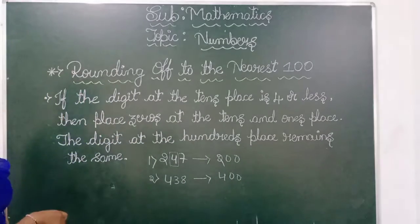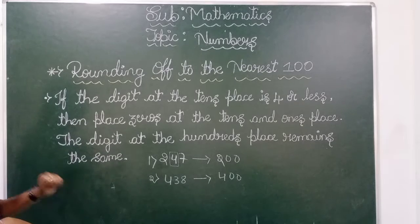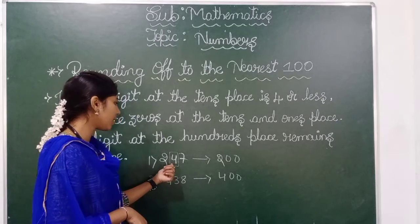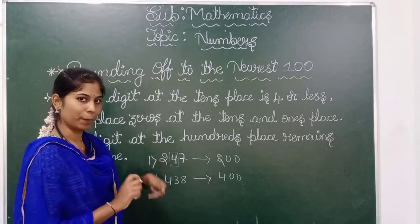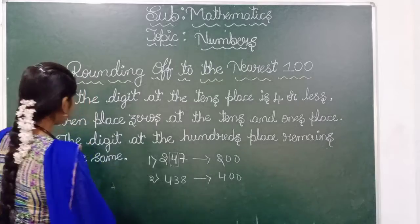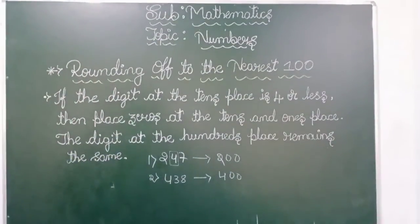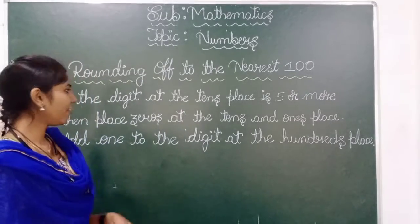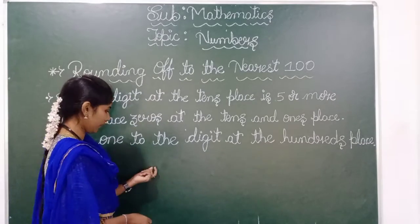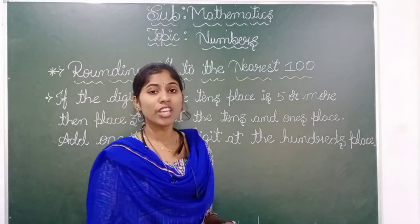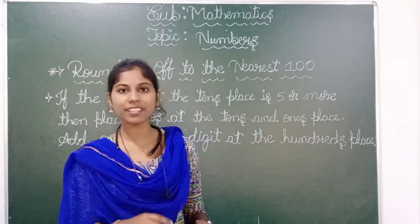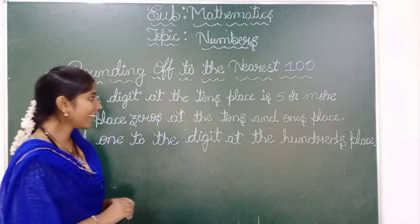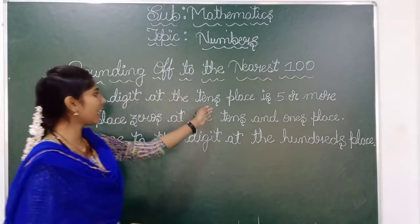So the rounding off of 438 to the nearest hundred is 400. This is all about the first rule of rounding off to the nearest hundred: if the tens place number is four or less than four, you have to consider the ones and tens places as zero. The hundreds place remains constant.